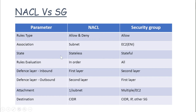NACLs are stateless, meaning they do not maintain any state — in order to pass any traffic inbound or outbound, you have to define both rules. But security groups are stateful, so they maintain state. If you have an inbound rule allowing inbound traffic, you do not need to add an outbound rule for the same traffic — the outbound will be automatically allowed.